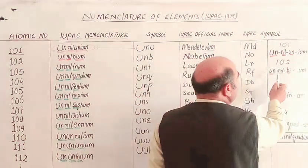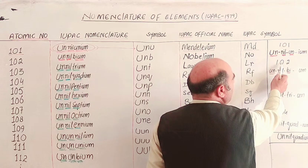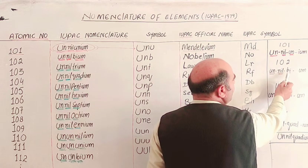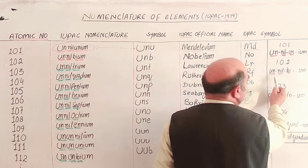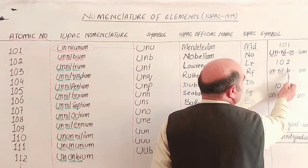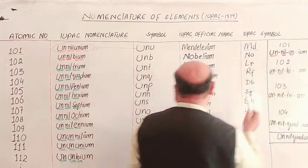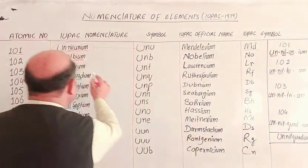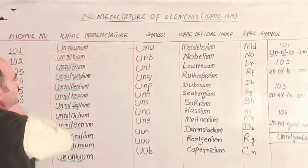So for atomic number 101: 1 is 'un', 0 is 'nil', 1 is 'un', combined to give 'Unnilunium'. That is the systematic IUPAC name for element 101.